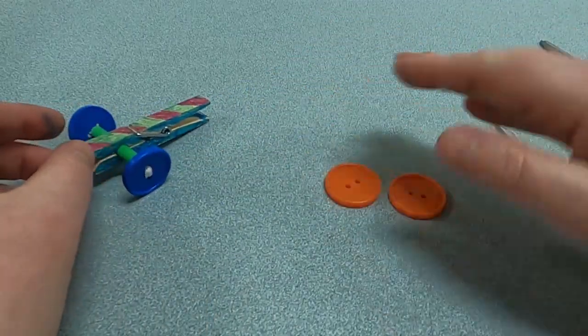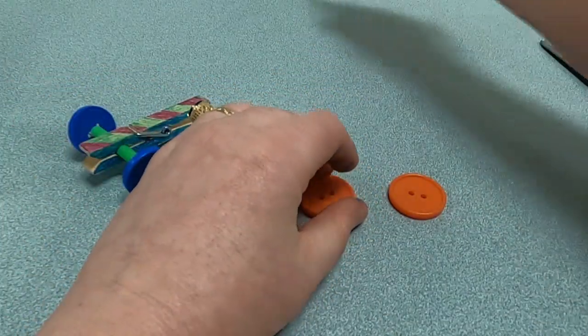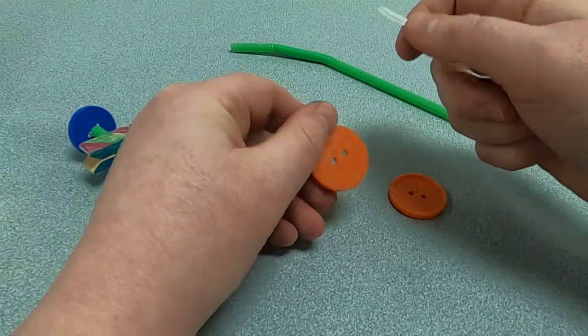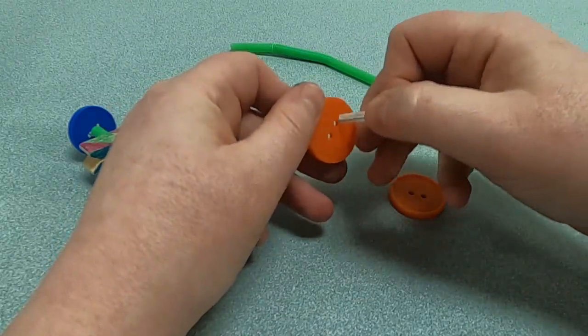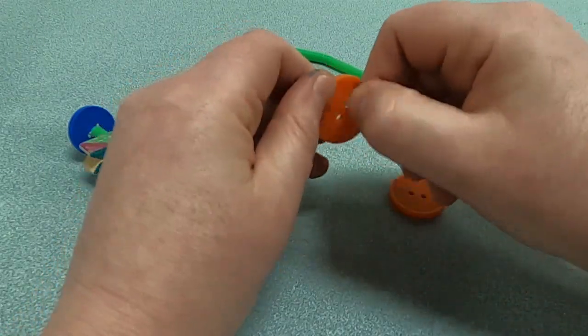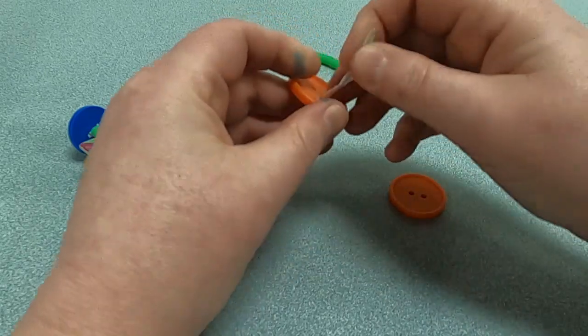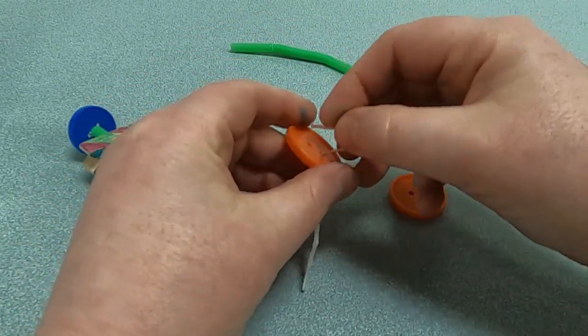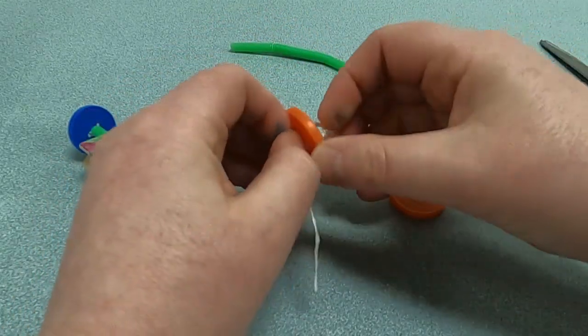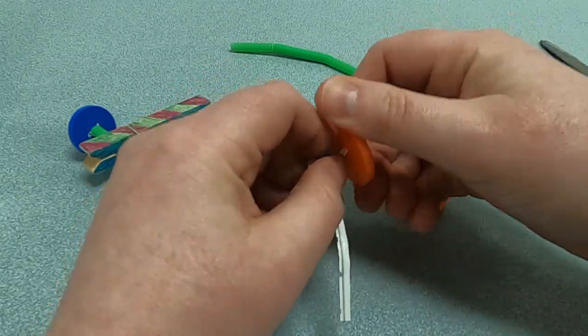Then we're going to do the same thing that we did for the blue buttons, and these are going to be our back wheels. So thread this in, and then we're going to take one end of the twist tie and put it into the other button. Twist it together.